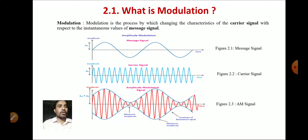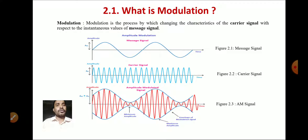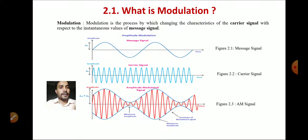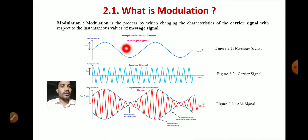What is modulation? Modulation is the process by which the characteristics of the carrier signal are changed with respect to the instantaneous values of the message signal. That is, the high-frequency carrier signal's characteristics will be changed with respect to the message signal.